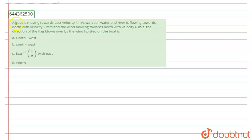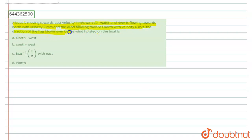The question is: a boat is moving towards the east with a velocity of 4 meters per second with respect to still water, and the river is flowing towards the north with a velocity of 2 meters per second, and wind is blowing towards the north with a velocity of 6 meters per second. Find the direction of the flag blown by the wind, posted on the boat.